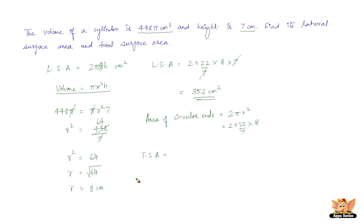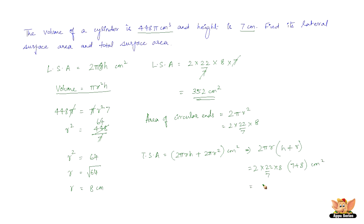The total surface area equals 2πrh + 2πr² cm², which can be written as 2πr(h + r). Substituting: 2 × (22/7) × 8 × (7 + 8) cm². Solving this, we get 754.28 cm². The total surface area of the given cylinder is 754.28 cm².